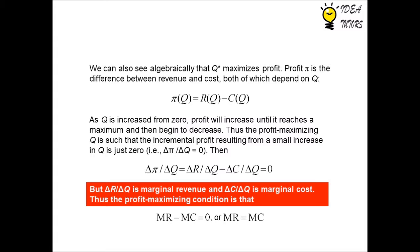The profit-maximizing q is such that the incremental profit resulting from a small increase in q is just zero. So for profit maximization, MR minus MC equals zero, which implies that at MR equals MC, profit is maximized.